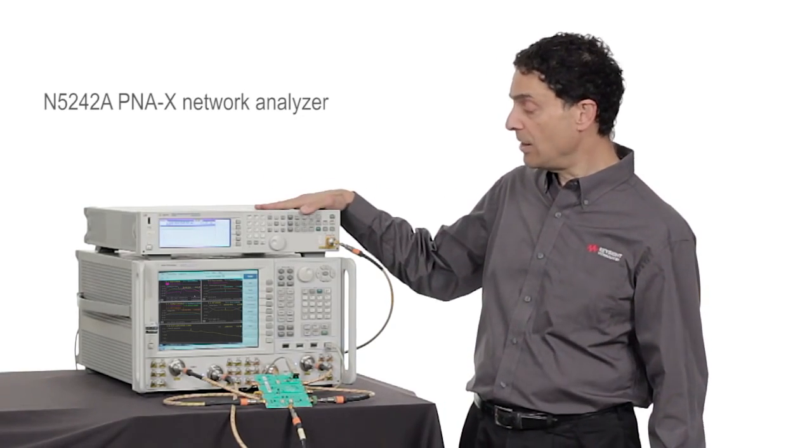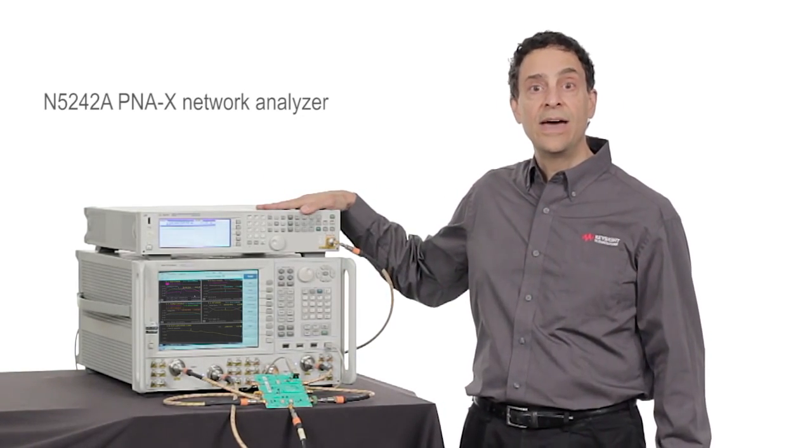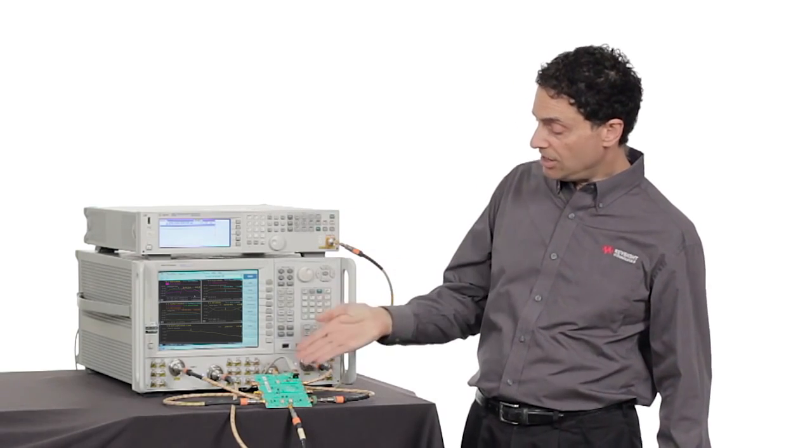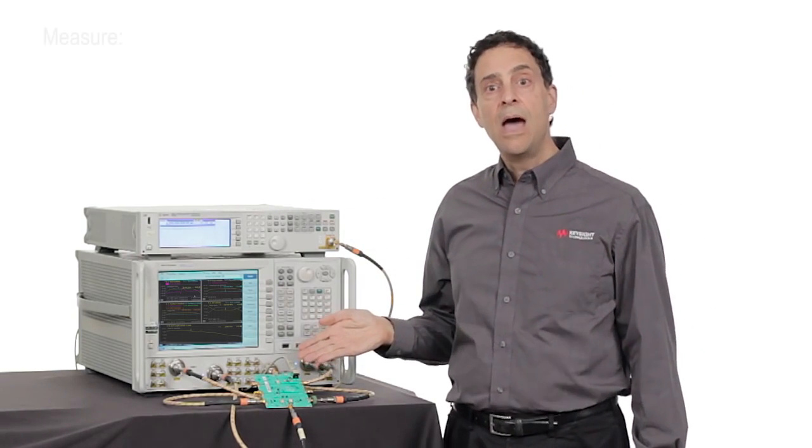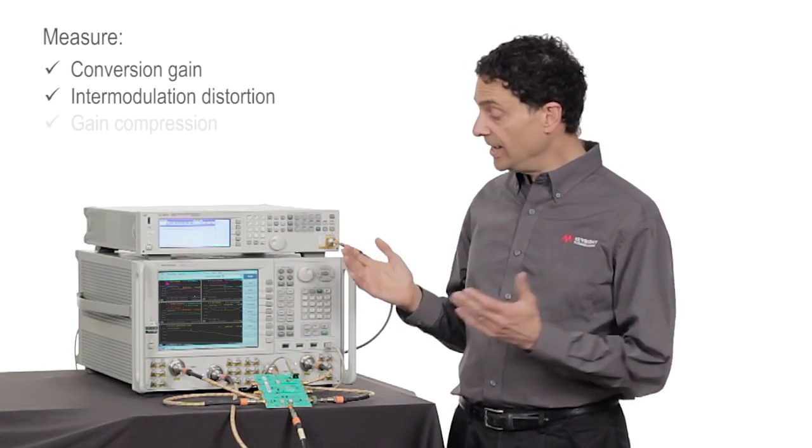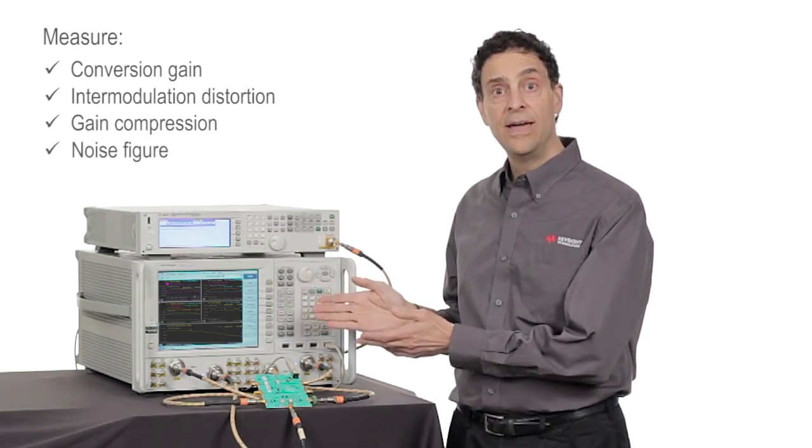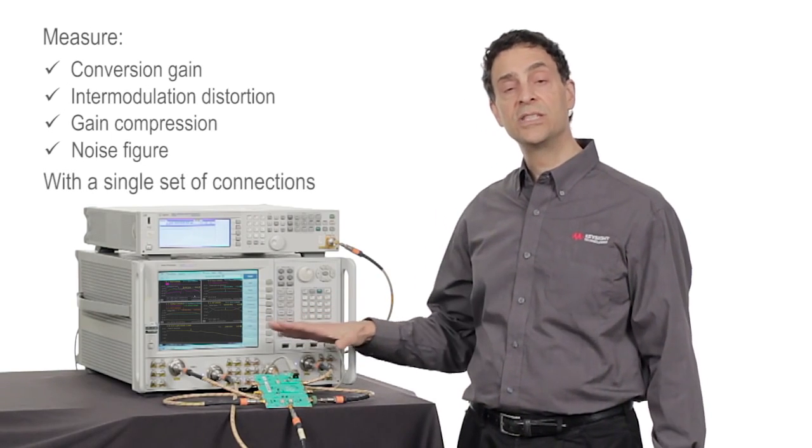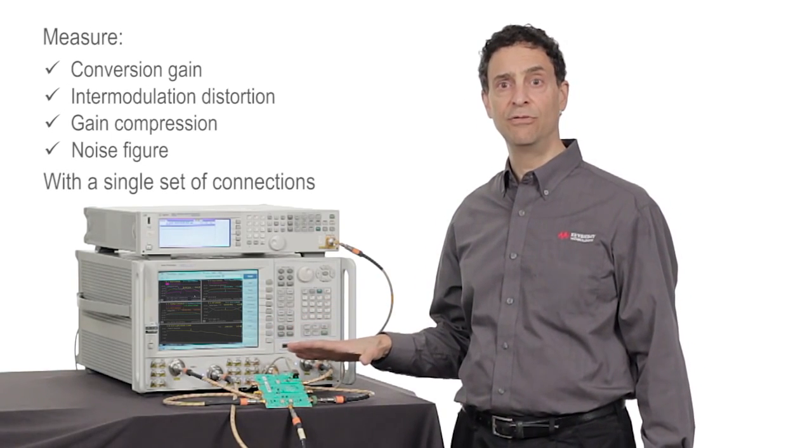I'm standing next to a PNA network analyzer with a simple single-stage RF downconverter. I'm measuring conversion gain, intermodulation distortion, gain compression, and noise figure, and this is all being done with a single set of connections to the converter.